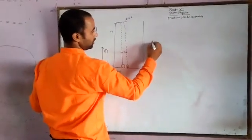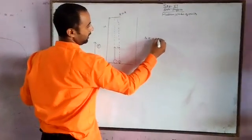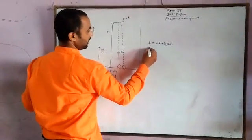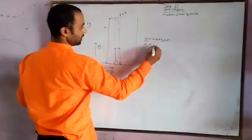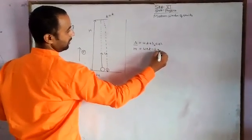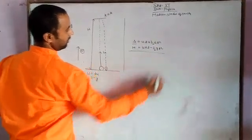By using the equation of motion, s is equal to ut plus half at square. What is the displacement? h is the displacement. What is the initial velocity? u. So h equals ut minus half gt square. This is the equation of motion.